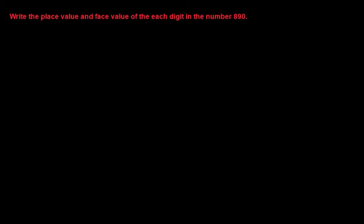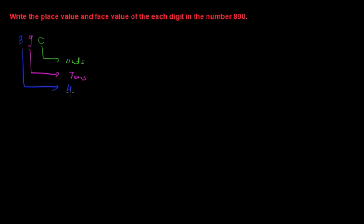Let me write 890 broken down as 8, 9, and 0. This 0 is present at the units place, 9 is at the tens place, and 8 is at the hundreds place.